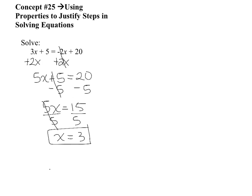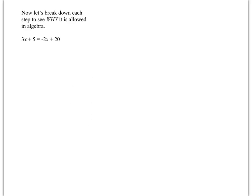Now, believe it or not, there are several different properties that just happened in the solving of this equation. We're going to solve this equation one more time using multiple steps. Looking at the right hand side of your paper — it is the same exact problem. We're going to solve it again, but now follow all the steps I'm going to write. I'm going to break this problem down into as many possible steps as I can and justify what we did with a property. All you are going to be responsible for is naming the property. I'm never going to ask you to break down the problem the way I break it down.